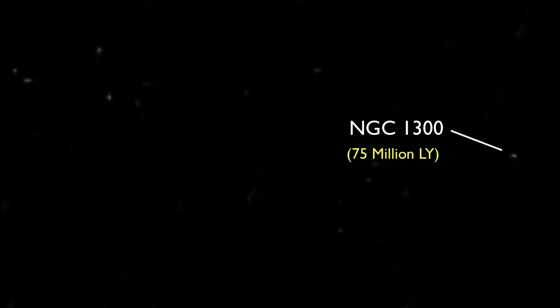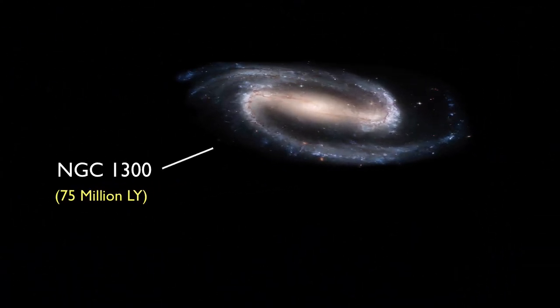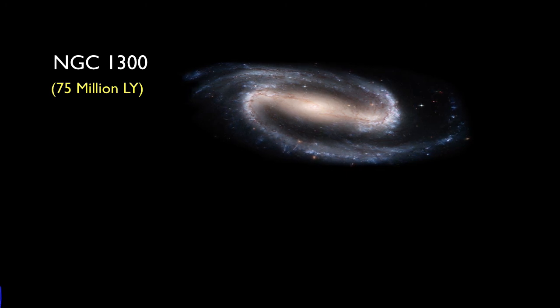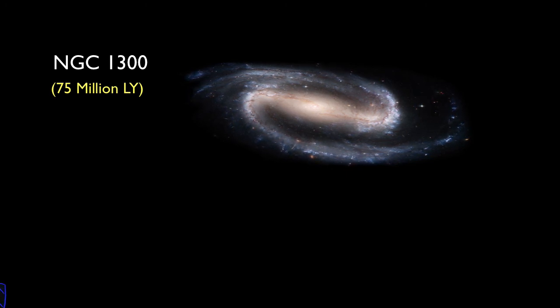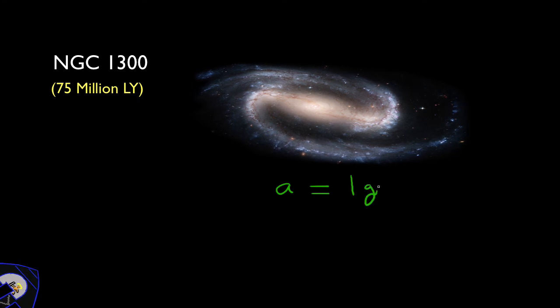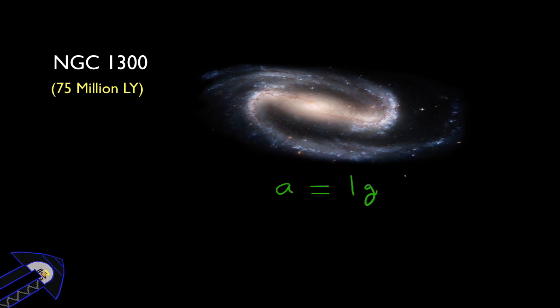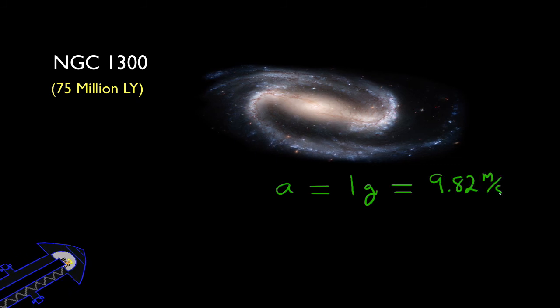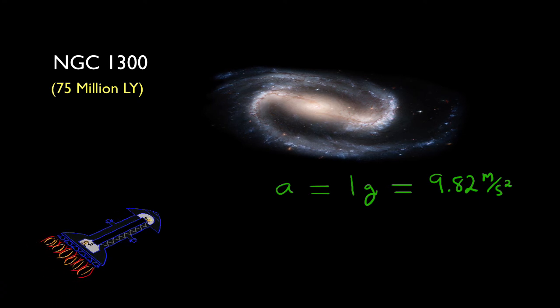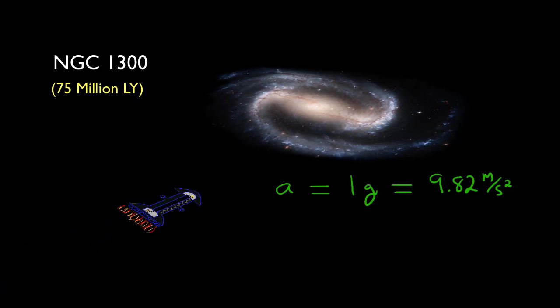So let me leave you with what I think is an ultimate brain teaser, as though your brain hasn't been teased enough. You're on a rocket ship, orbiting your home planet, and you're now ready to leave for a neighboring galaxy. You turn on the engines so that you start accelerating toward this distant galaxy at a constant rate of 1g, which is 9.82 meters per second squared. At 1g, you know, you'll have the comfort of being able to stand up as though you're on Earth.